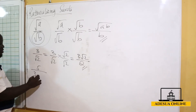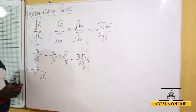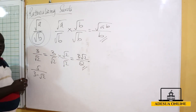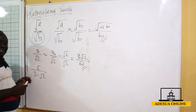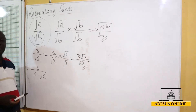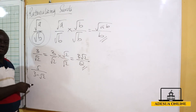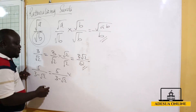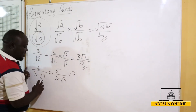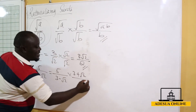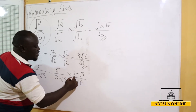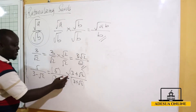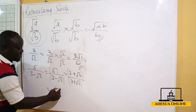Now suppose I have 5 over 3 minus root 2 and I'm asked to rationalize this. In this situation, the denominator is 3 minus root 2. We multiply the numerator and denominator by the conjugate of the denominator, which is 3 plus root 2. Then we perform normal algebraic multiplication: 5 times 3 gives 15, and 5 times root 2 gives 5 root 2.